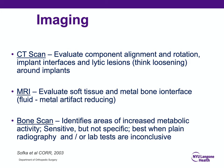Further imaging commonly used includes CT scan, where you can evaluate component alignment and rotation, as well as examine the implant-bone interfaces and lytic lesions around implants. If there are large lytic lesions, you should consider loosening, which may be septic or aseptic. MRI is increasingly being used to evaluate the soft tissue around total knee arthroplasties and can evaluate the metal-bone interface. Bone scans identify areas of increased metabolic activity; they're sensitive but not specific and are best used when plain radiography and other lab tests are inconclusive.